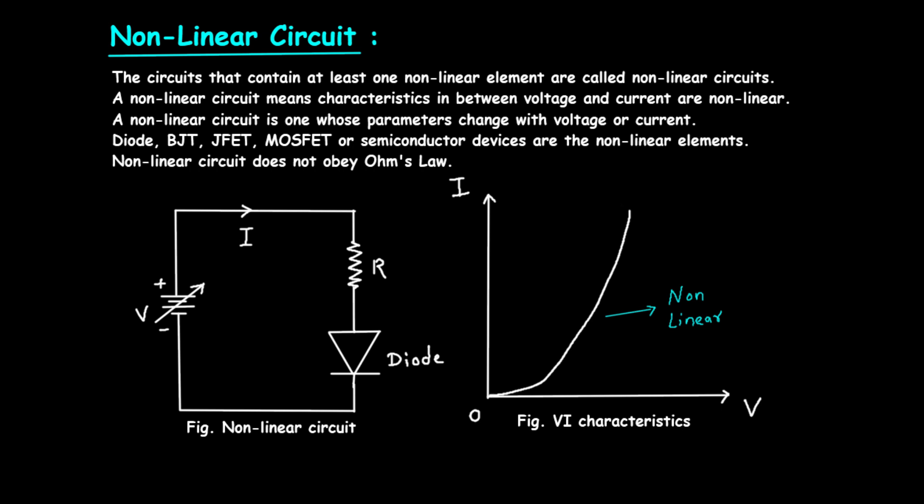For example, in a linear resistor, doubling the voltage would double the current. But in a non-linear element, like a diode, the relationship between voltage and current is not that straightforward.